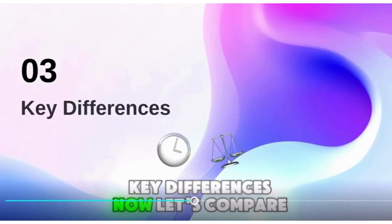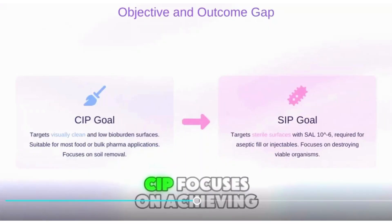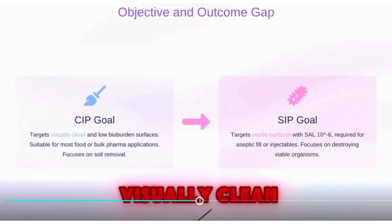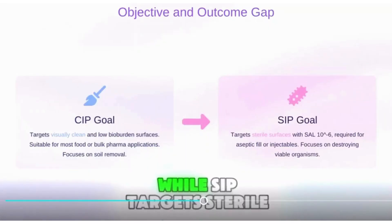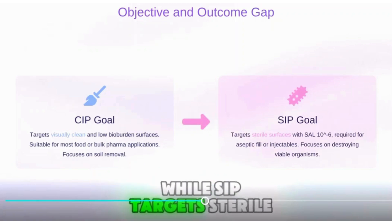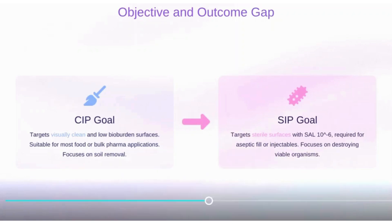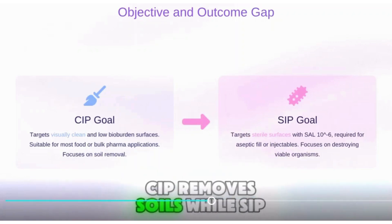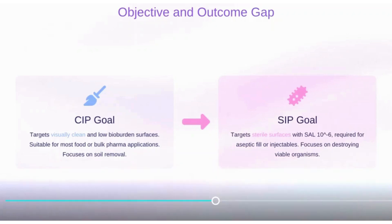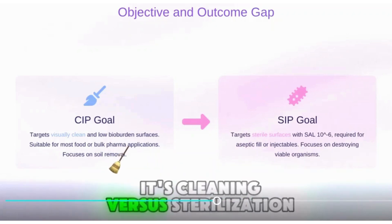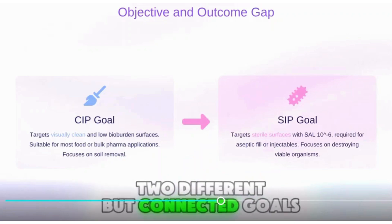Key Differences. Let's compare the two. CIP focuses on achieving visually clean, low-bioburden surfaces, while SIP targets sterile surfaces required for aseptic processes. CIP removes soils, while SIP destroys microorganisms. It's cleaning versus sterilization — two different but connected goals.